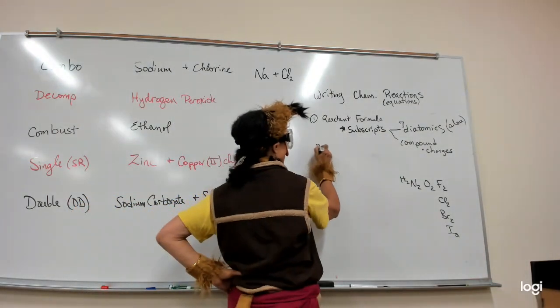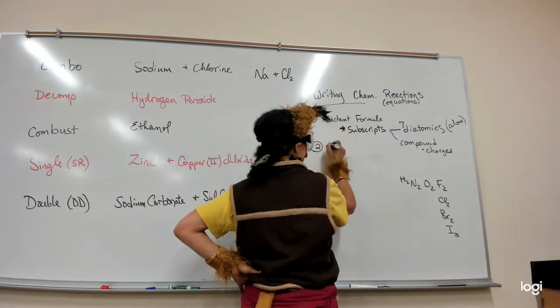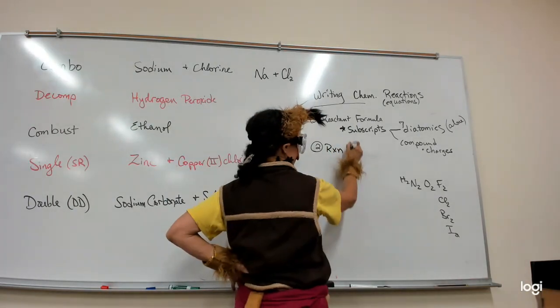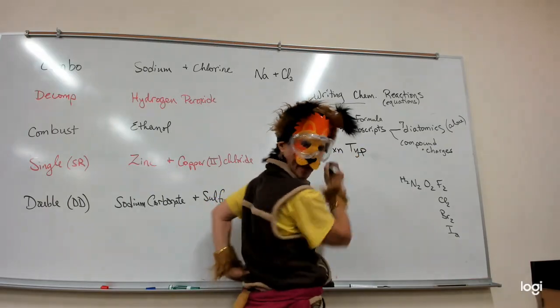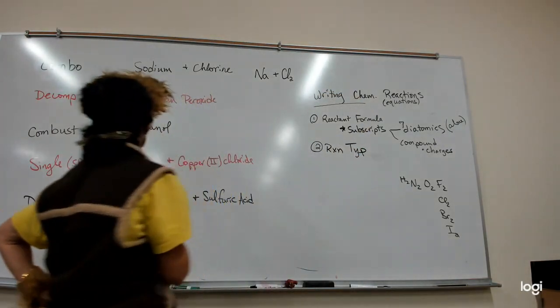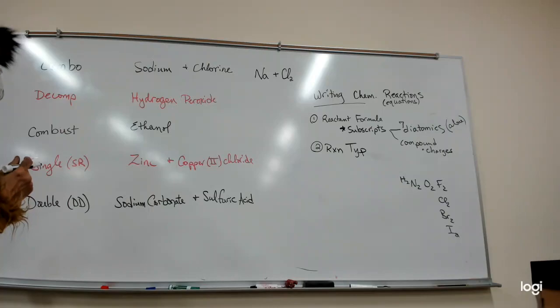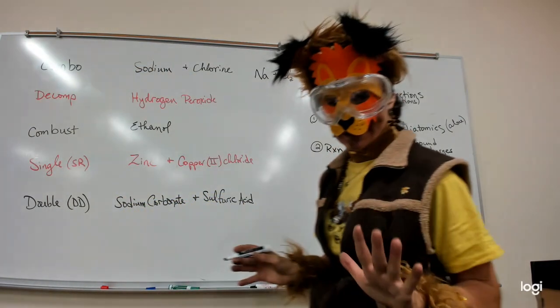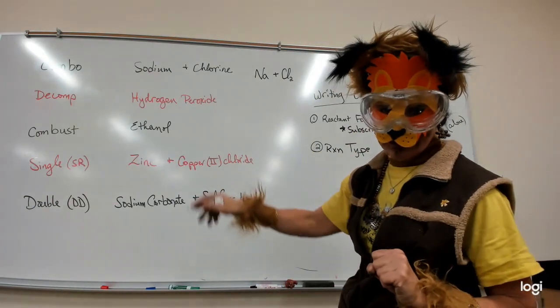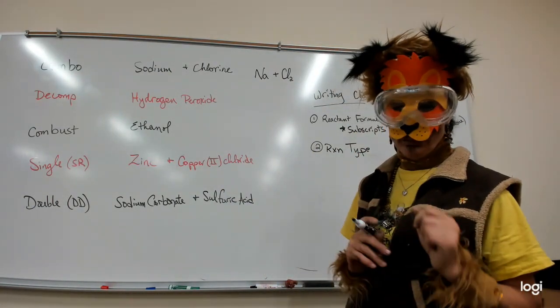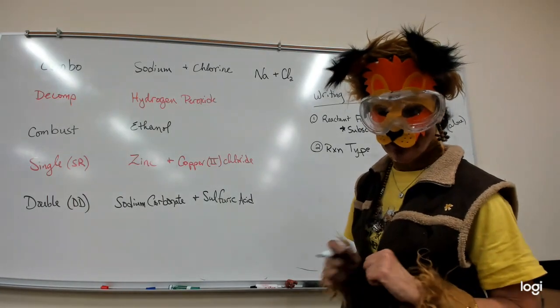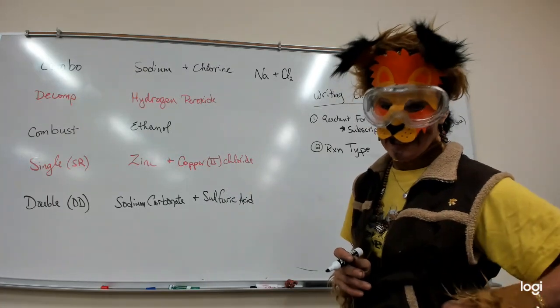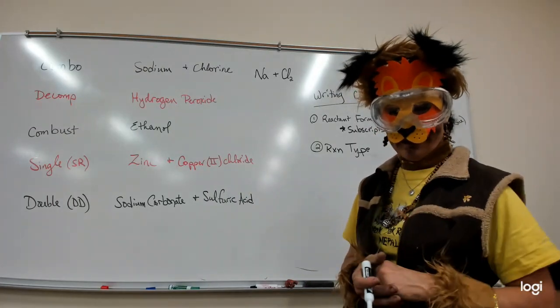The second step of writing chemical equations is the reaction type. There are many types of reactions. We're going to just do five, because they're ones that you can do. And we're going to walk through each of these five.